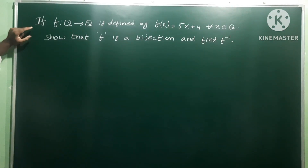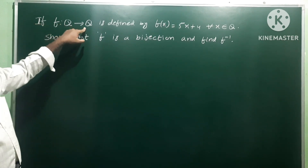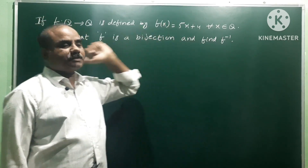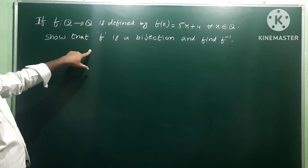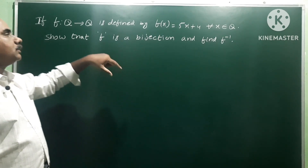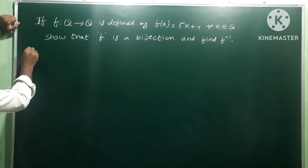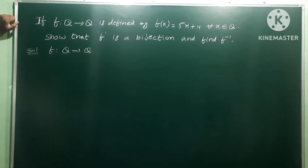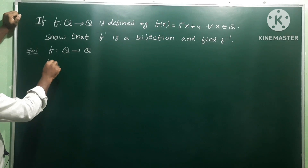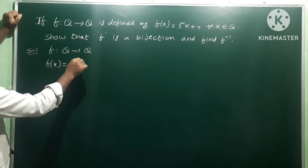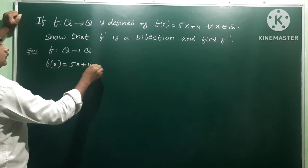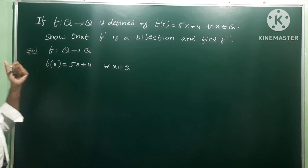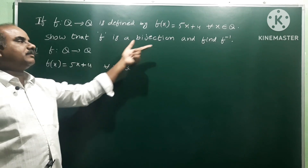If f is a function from Q to Q — rational numbers to rational numbers — defined by f(x) = 5x + 4 for all x belonging to Q, show that f is a bijection and find f inverse.